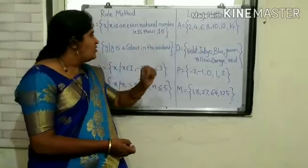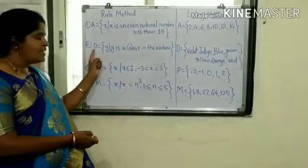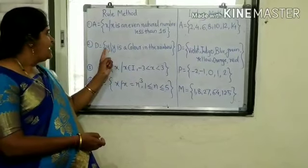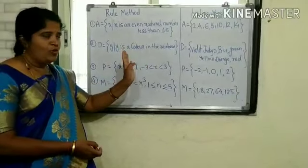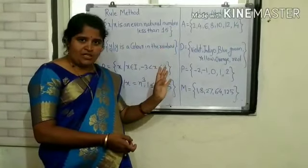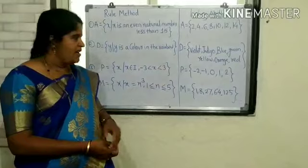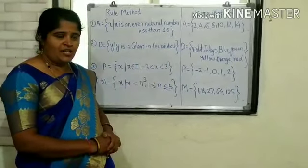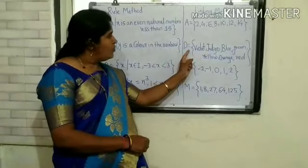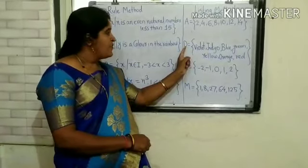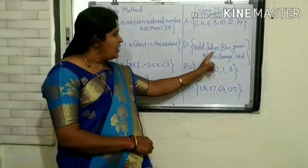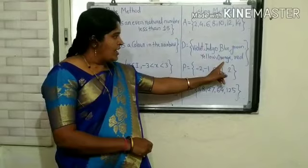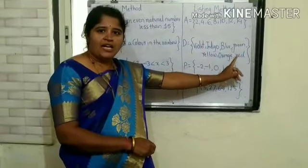The second example is set D. D = {Y | Y is a color in a rainbow}. According to the listing method, the property of this variable is Y is a color in the rainbow. So the colors in the rainbow are: D = {violet, indigo, blue, green, yellow, orange, red}.